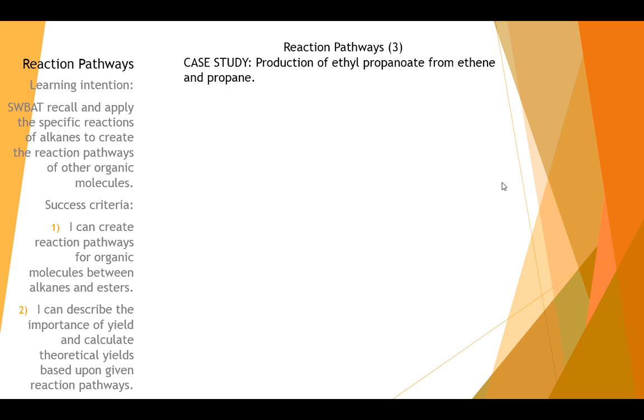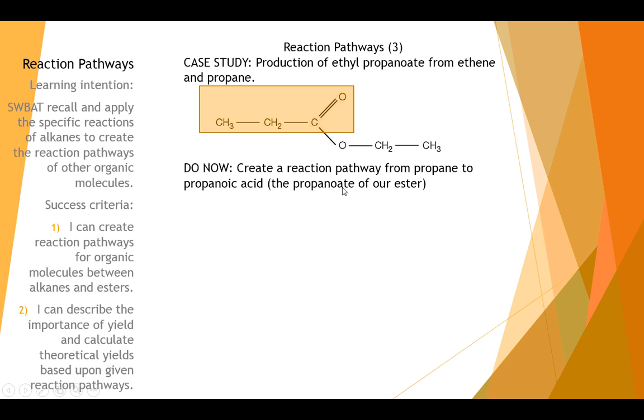Let's have a look at part two. Part two is looking at this part of the ester. It's the propyl bit, the propanoate from propane. So if you haven't guessed, what I want you to do is try and create propanoic acid from propane. Pause the video and figure out how it's done.